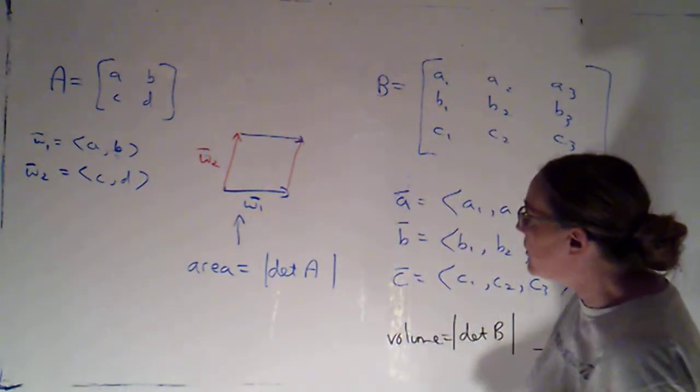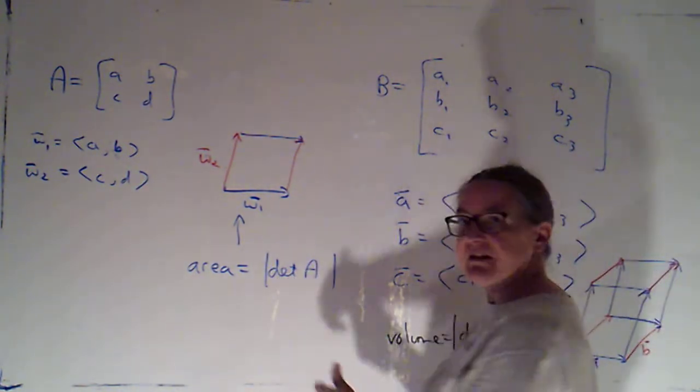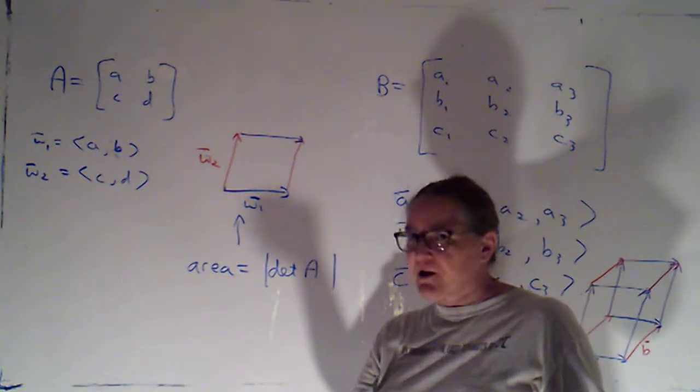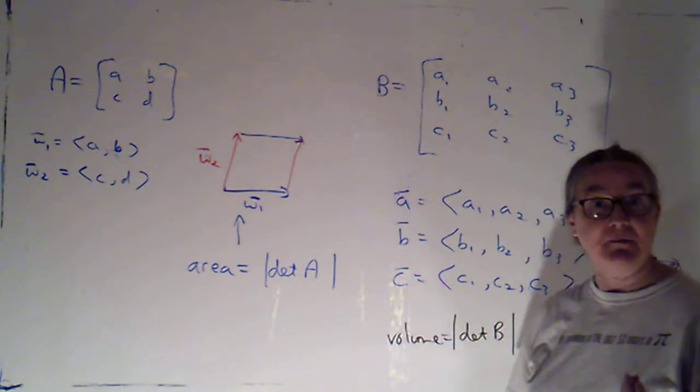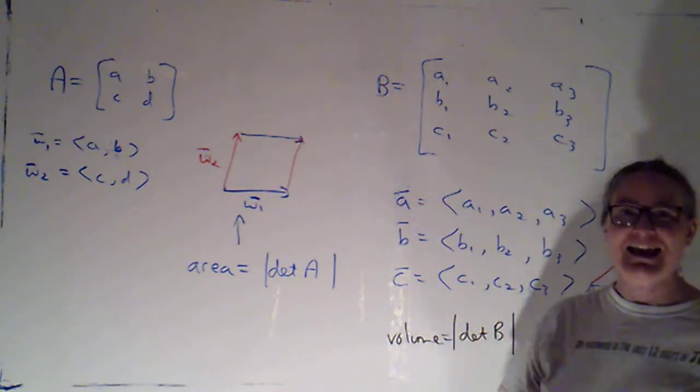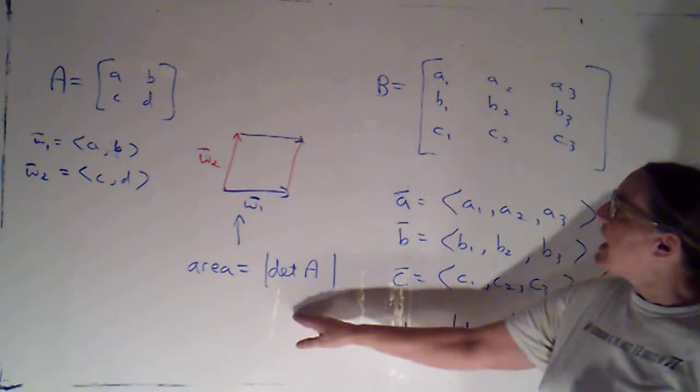Okay, you'll notice that what I put inside these vertical bars is not A, then the vertical bars would mean determinant. What I put inside is the determinant of A, which is a number. So now those bars do mean absolute value.